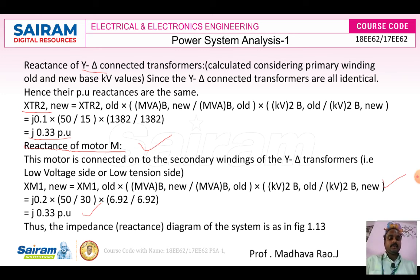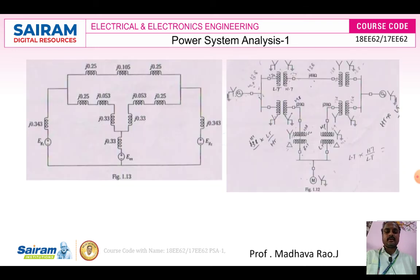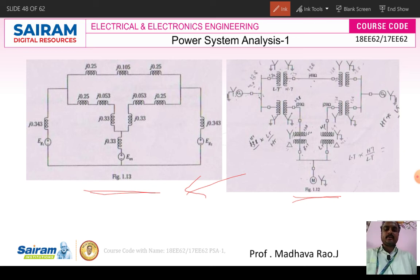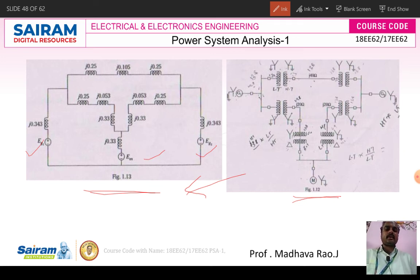According to the given power system network diagram, we need to draw the reactance diagram. Generators are always connected in parallel, while transformers and transmission lines are in series. Figure 1.13 shows the reactance diagram of the given problem. We have generator 1, generator 2, and the motor — all in parallel. The reactances of the transformer and transmission lines are in series: transformer 1 is j0.25 and the transmission line is j0.105.